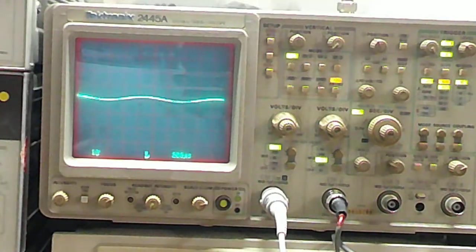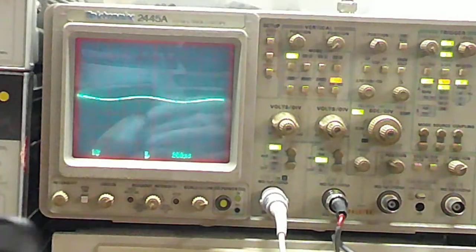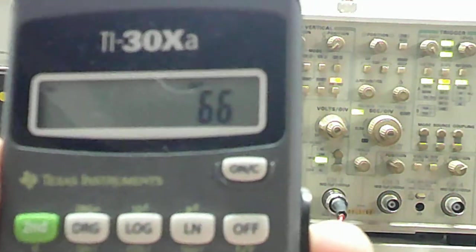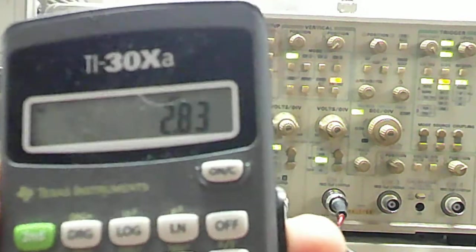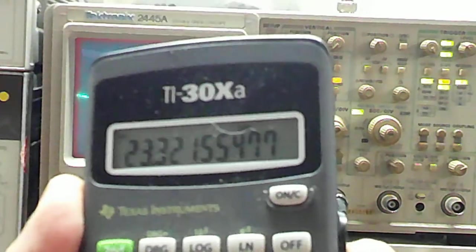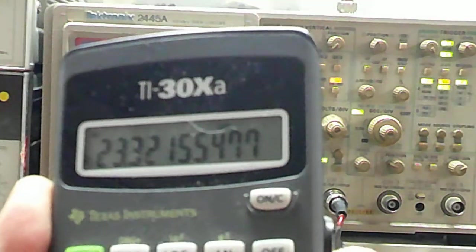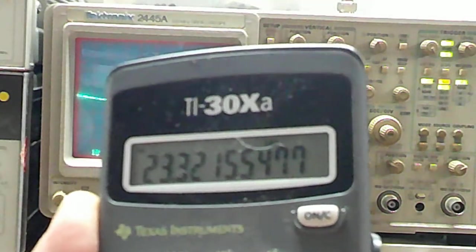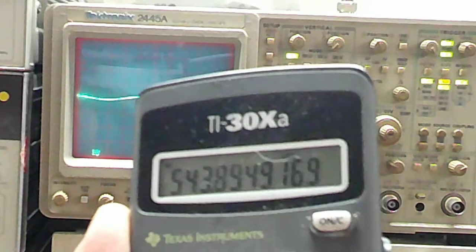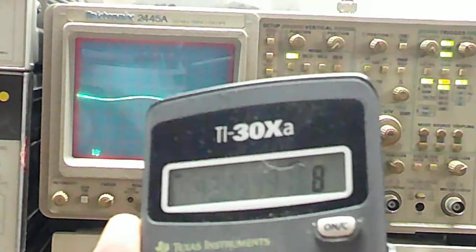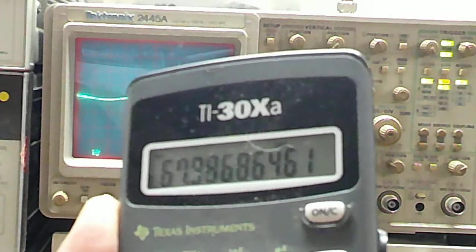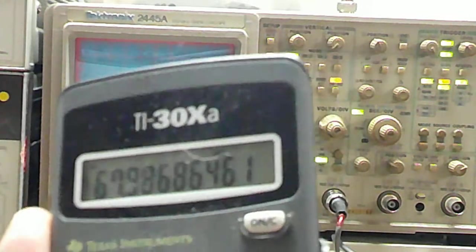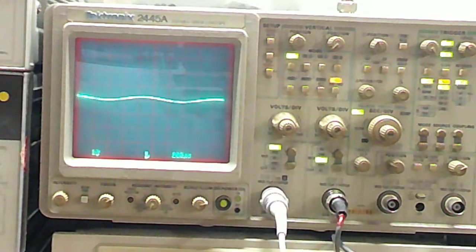Now we're going to need to convert that to RMS voltage to get a meaningful calculation. So let's see here. We take the calculator and we punch in 66 divided by a factor of 2.83. It shows us 23.3 volts RMS. And if we square that and divide it by the dummy load's resistance of 8 ohms, we get 67.98 watts. Amplifier is rated at 65, so that seems reasonable to me.